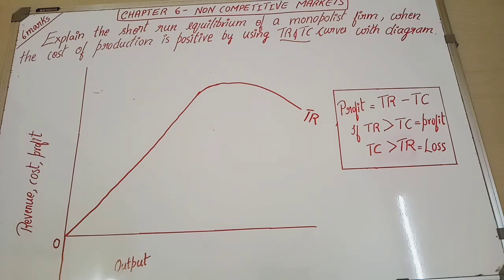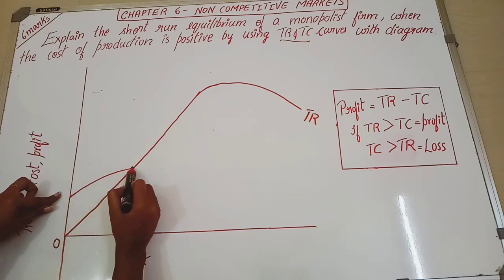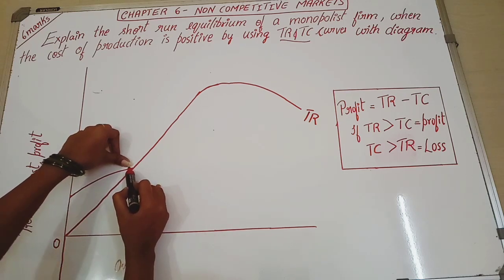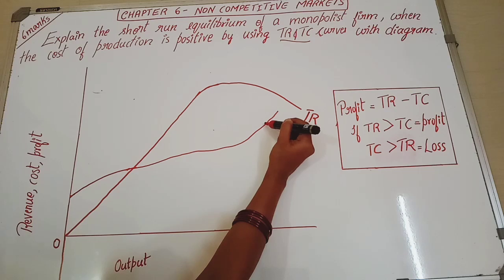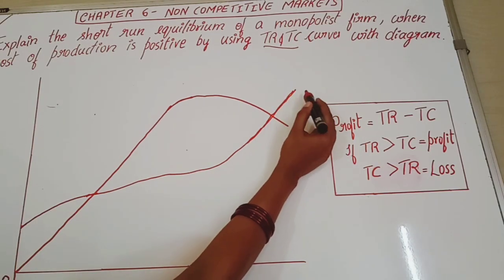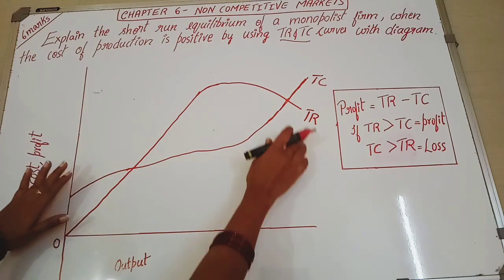So total revenue curve is drawn. Next, the curve we have to draw is total cost curve. So total cost we are not starting from zero. Why? Because we know that even if no production is going on, there are certain costs which are bound to happen. May be paying the rent of a factory. So there are certain costs from the right beginning. So the total cost curve will start a little above zero. So somewhere here we shall start.